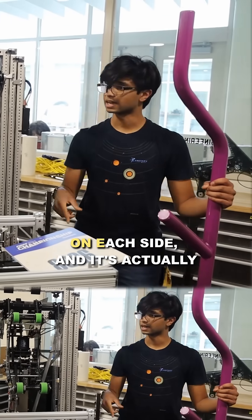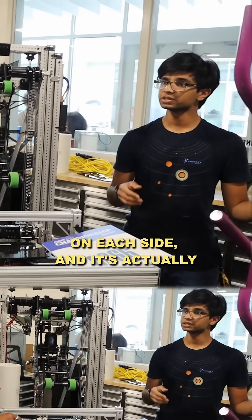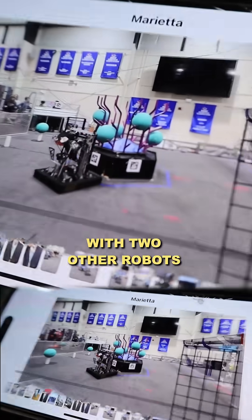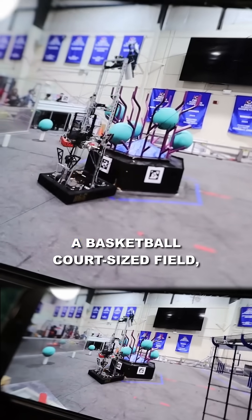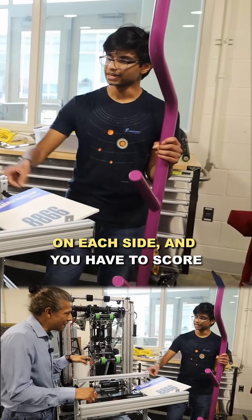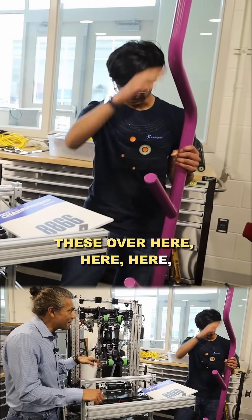There are four scoring blocks on these bars set up on the field—12 on each side. It's actually 3v3, so you're on an alliance with two other robots versus three other robots on a basketball court-sized field. You have to score the coral on the bars, and there's a dump station at the bottom.